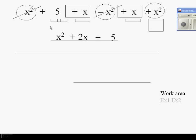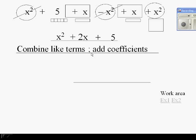Remember, this is called combining like terms, and we do that by adding our coefficients.